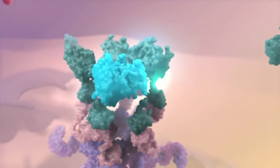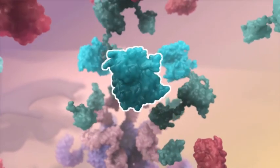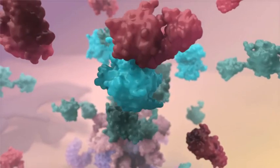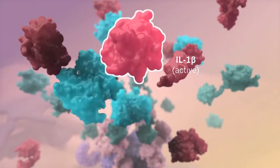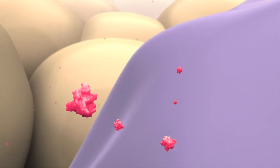The inflammasome cleaves caspase-1 from its precursor, allowing the activated enzyme to generate mature IL-1-beta, which is then released from the cell.